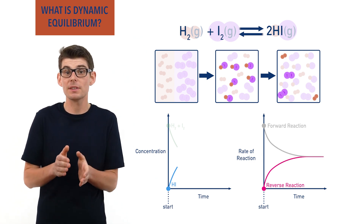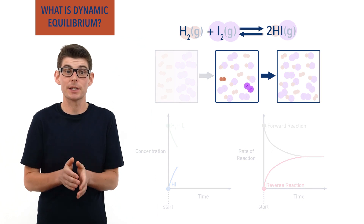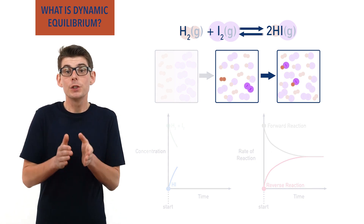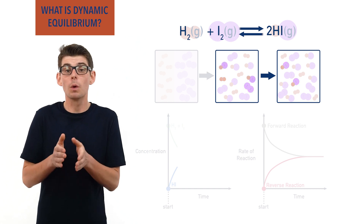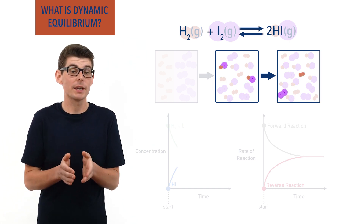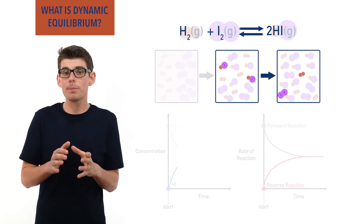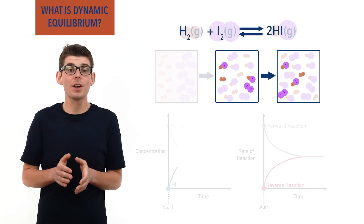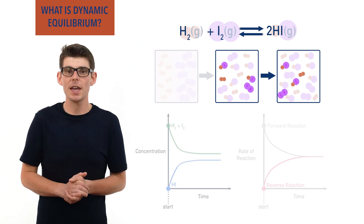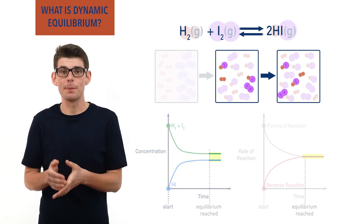Eventually, there will come a point where the rates of both become the same. In the time it takes for one mole of hydrogen and iodine to react and form two moles of hydrogen iodide, two moles of hydrogen iodide will also react and form one mole of hydrogen and one mole of iodine. Once this point is reached, the concentrations of everything in the mixture no longer change. This is dynamic equilibrium.